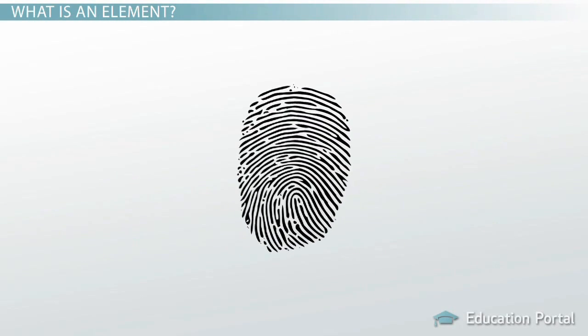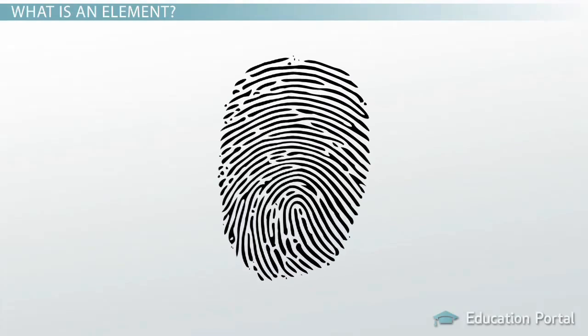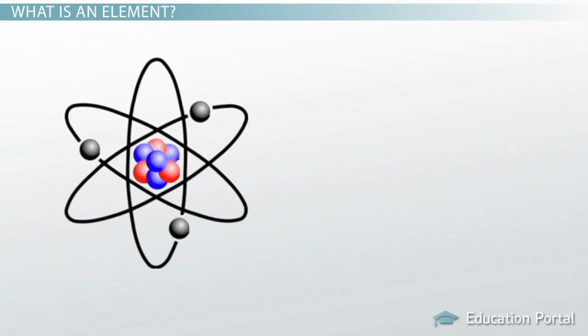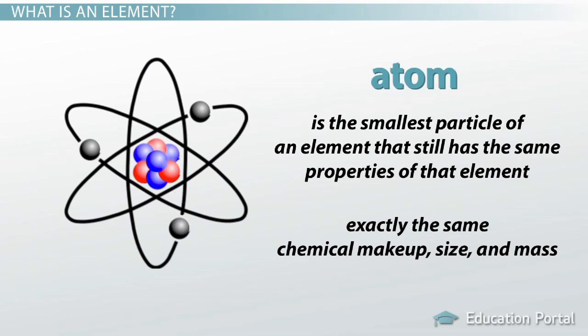You can think of each kind of element having its own unique fingerprint, making it different than other elements. Elements consist of only one type of atom. An atom is the smallest particle of an element that still has the same properties of that element. All atoms of a specific element have exactly the same chemical makeup, size, and mass.